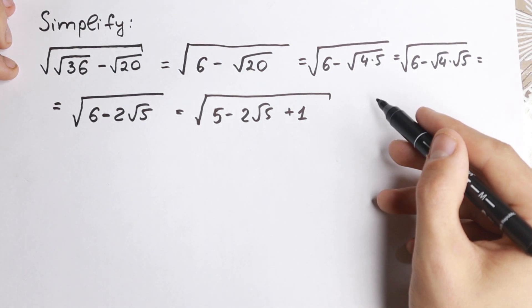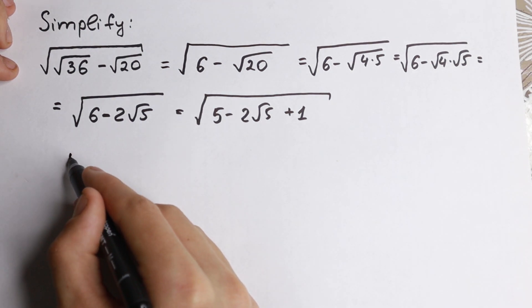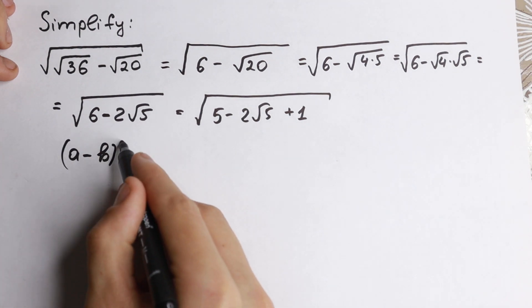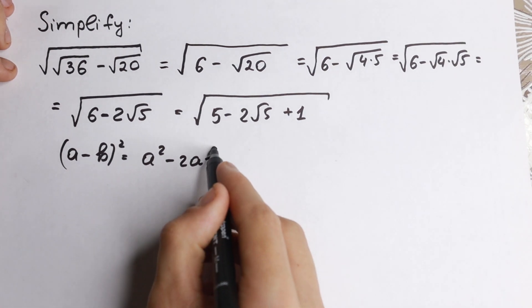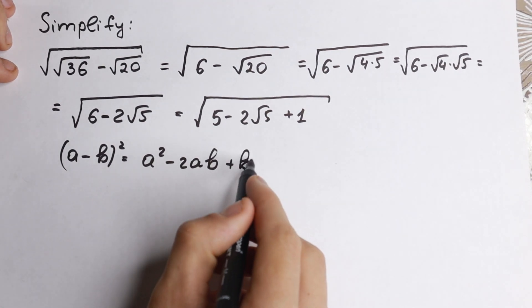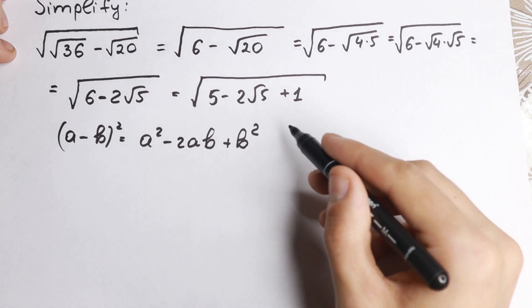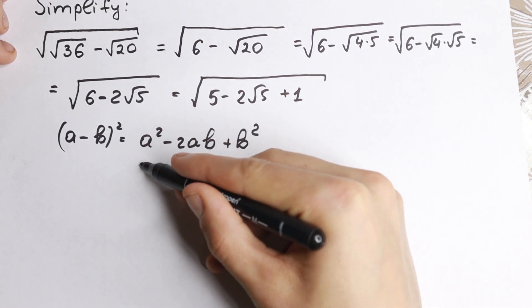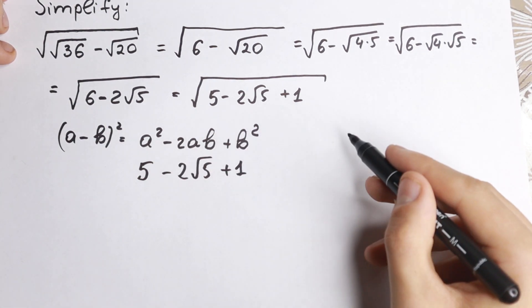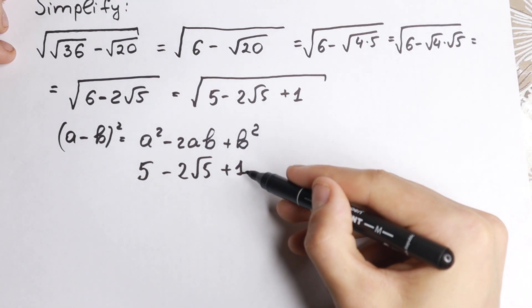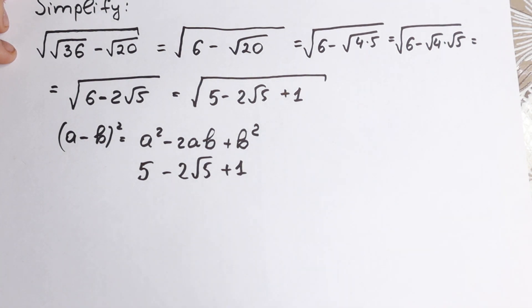I'm going to show you how we can solve it. Under this expression, I write the identity: (a minus b) squared equals a squared minus 2ab plus b squared. And under this identity, I write our expression: 5 minus 2 square root of 5 plus 1.